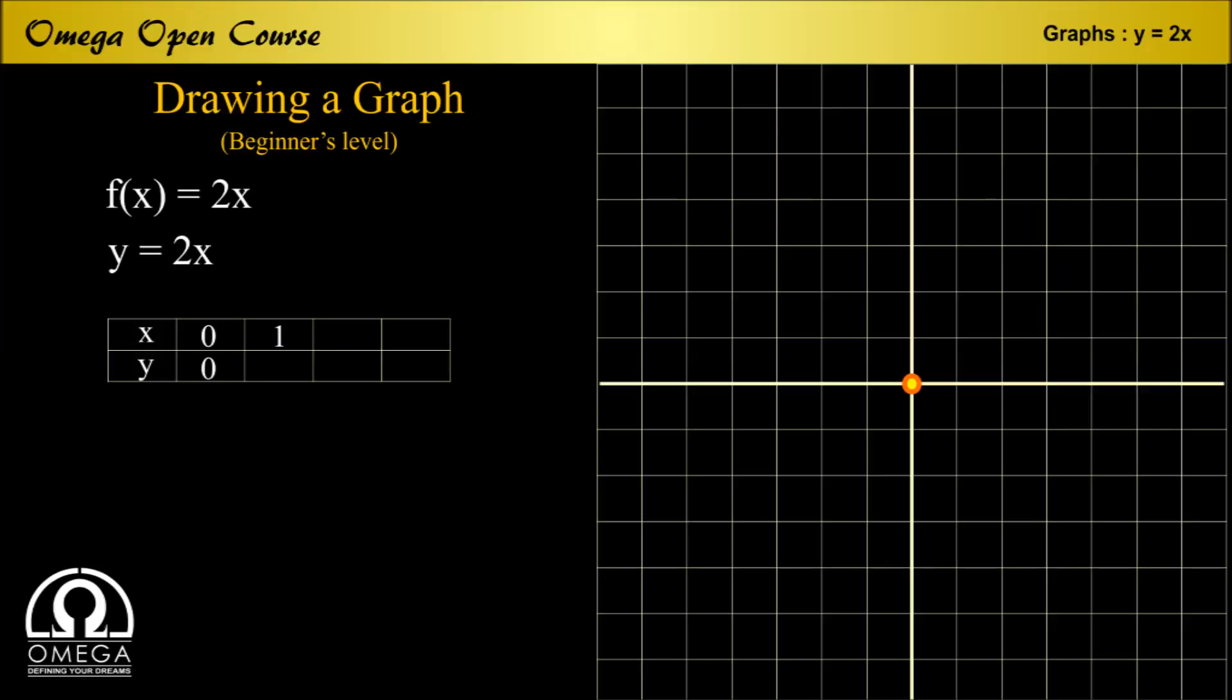If we put x is equal to 1 in our equation, we get the value of y is equal to 2. So another coordinate is (1,2) and we locate this point as well on our graph.